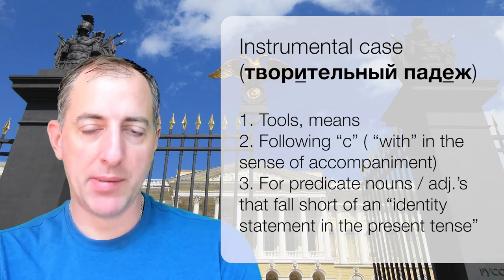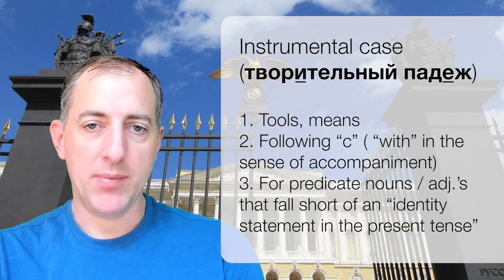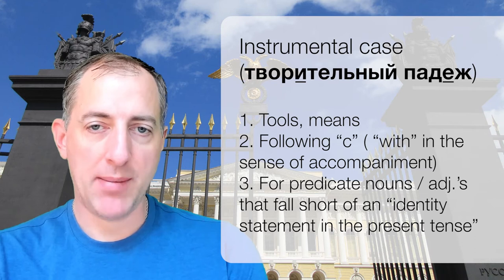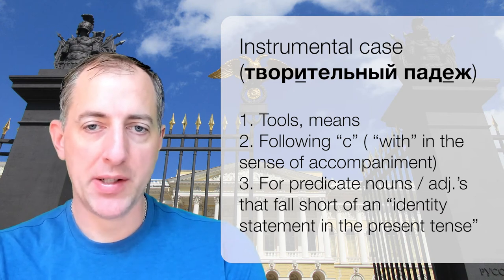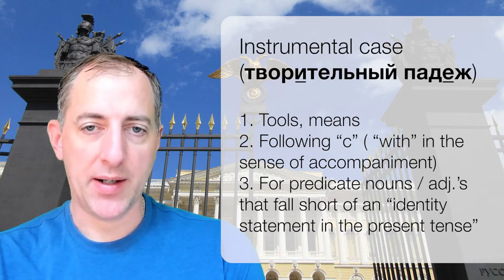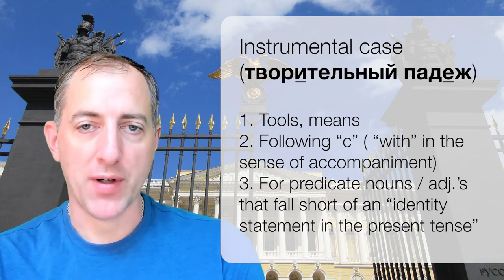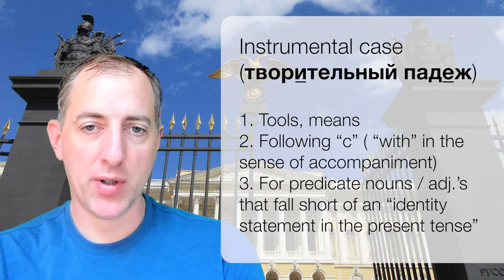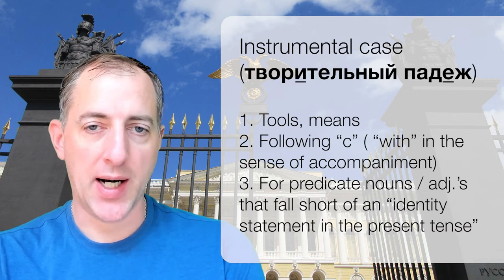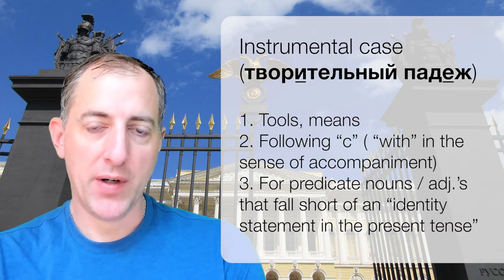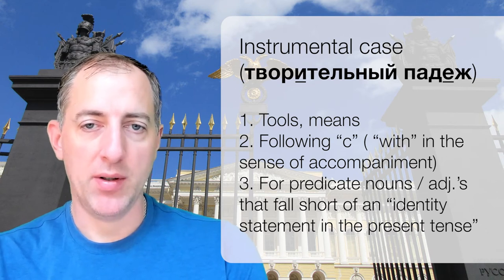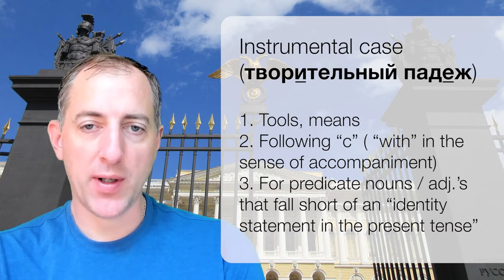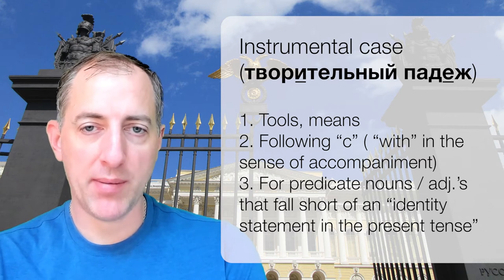Predicate nouns can also appear in the instrumental when they fall short of an identity statement in the present. If you say 'he is a doctor' — an identity statement in the present — the predicate noun is nominative: он врач. But if it's something short of that identity — past, becoming, or future — we get the instrumental. Он был врачом — he used to be a doctor; он стал врачом — he became a doctor; он будет врачом — he will be a doctor; он хочет стать врачом — he wants to become a doctor. Instrumental in all those cases. Even in the present tense, verbs of becoming or seeming take an instrumental predicate: он становится врачом — he is becoming a doctor.